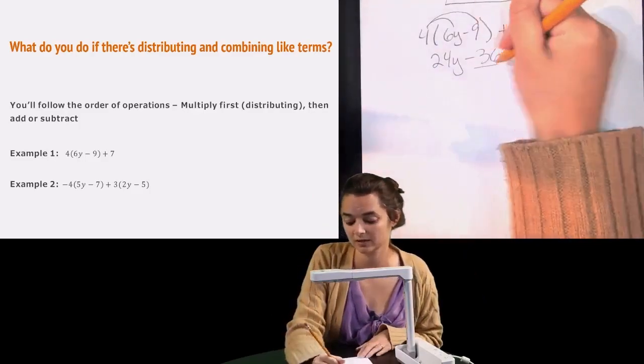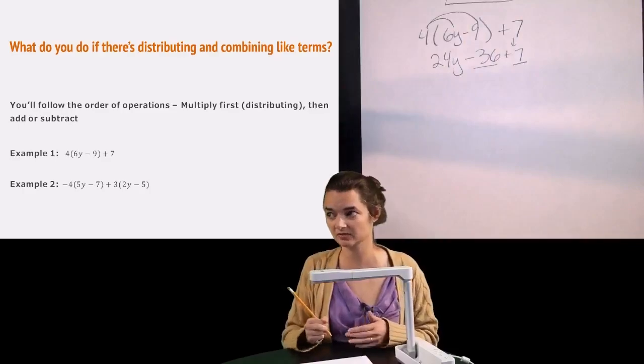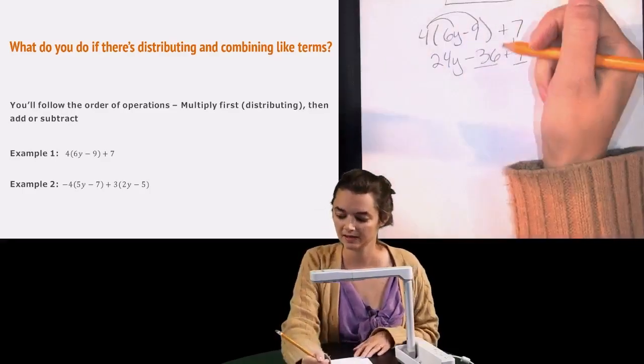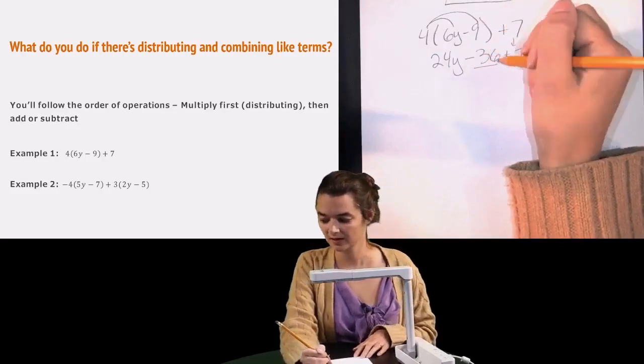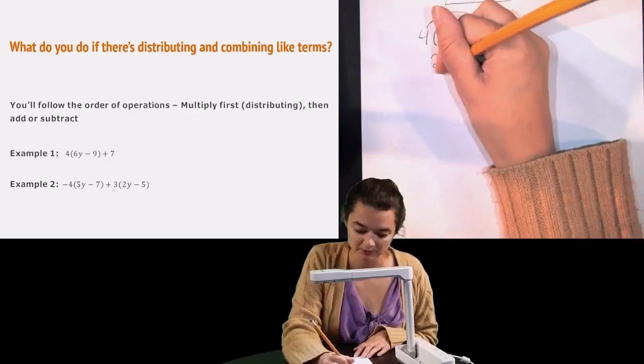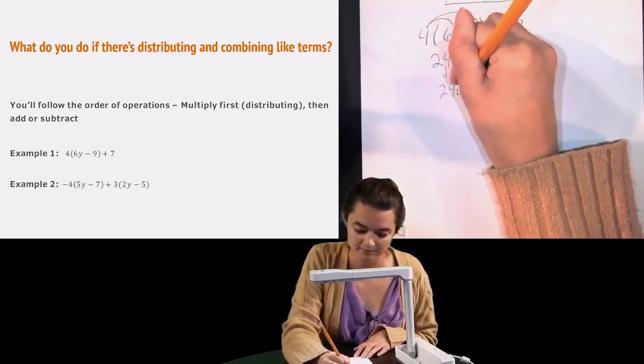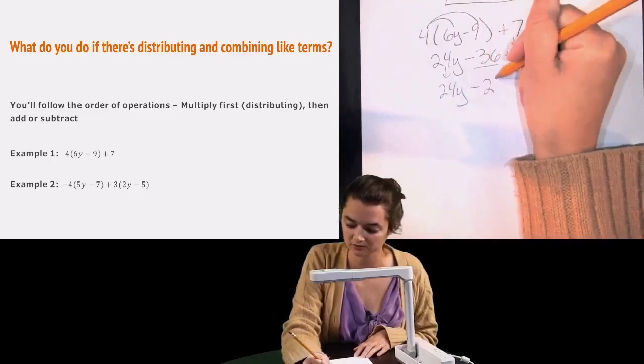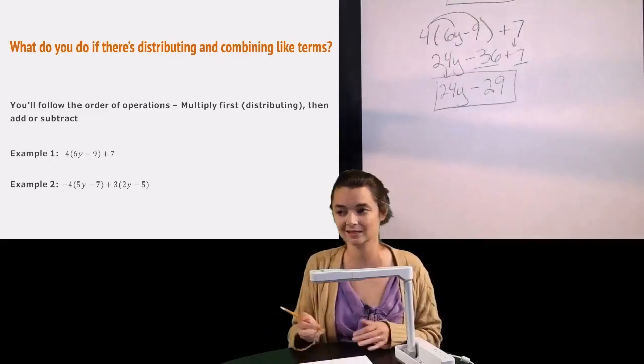Then from here, do I have any like terms? Yes, I do. I have a negative 36 and a positive 7. Those are both constants, which makes them like terms. And negative 36 plus 7 would be negative 29. So I'm going to bring down my 24y. And then I combine those together to get negative 29.